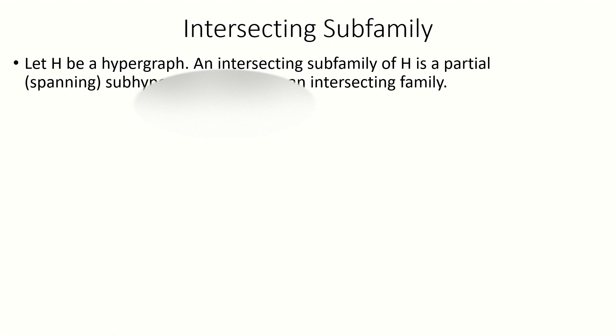Next, if we have a hypergraph H with a partial subhypergraph H prime that is an intersecting family, we say that H prime is an intersecting subfamily of H.